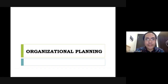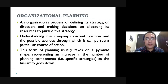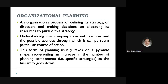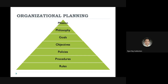Let us go to another type of planning, which is organizational planning. In this type of planning, your organization undergoes a process of defining your strategy, your direction, and making decisions on allocating your resources to pursue your strategy. It's like understanding the current position of your organization and exploring possible avenues through which you can pursue a particular course of action. In this process, you try to develop your mission, vision, philosophy, goals, objectives, policies, procedures, and rules.